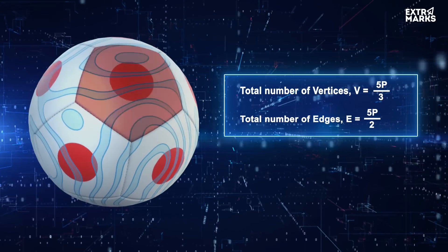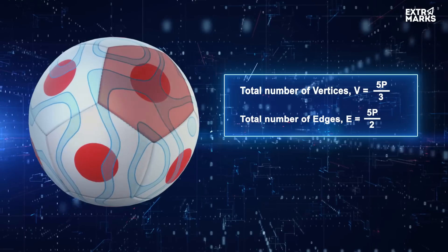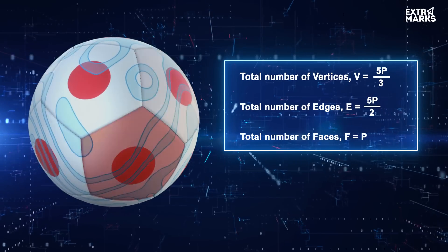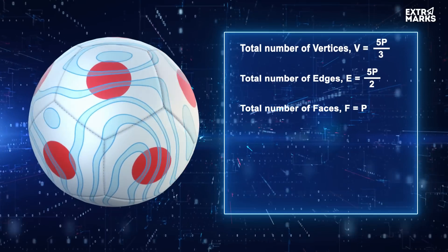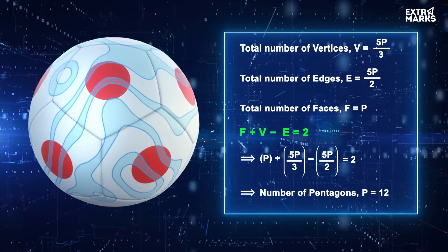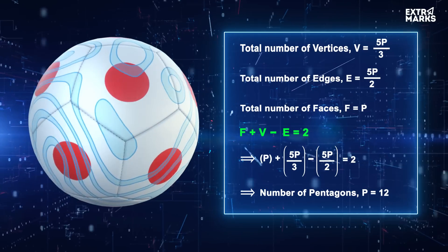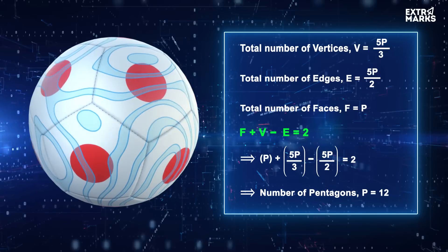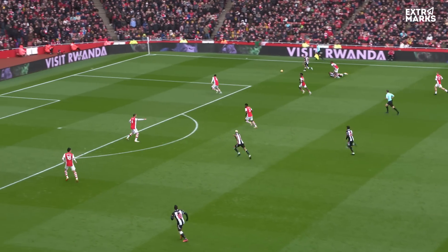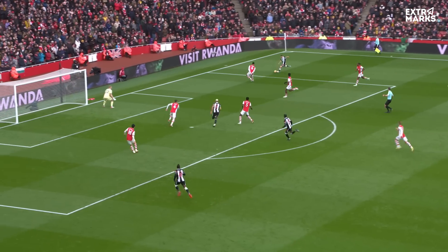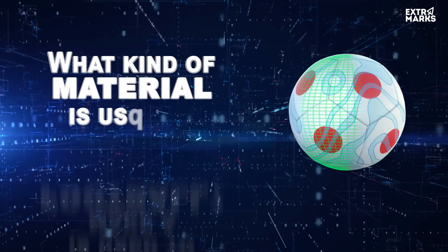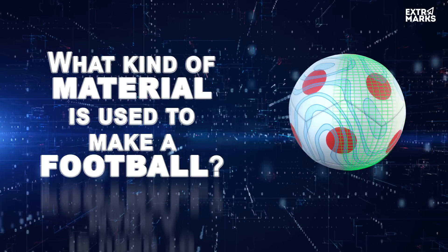Also, each of the P pentagons form a face of the football, so the total number of faces is P. A simple application of Euler's formula shows that the number of pentagons is 12. Now you know the reason behind this very specific number, 12. Just as the number of pentagons on a football, the material that a football is made of is also very specific. Do you know what kind of material is used to make a football?